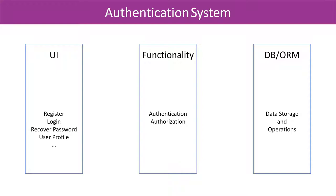There are three different layers of any authentication system. We'll have the UI layer, which interacts with users to register, login, recover password, manage user profile, etc. Then we'll have the core functionality for authentication and authorization — this is where we receive the user information, authenticate it, and deal with a ticket or token. We verify the ticket to see whether it's valid. That's authentication. Then we check whether the user has sufficient permission to access the resources they're trying to access — that's authorization.